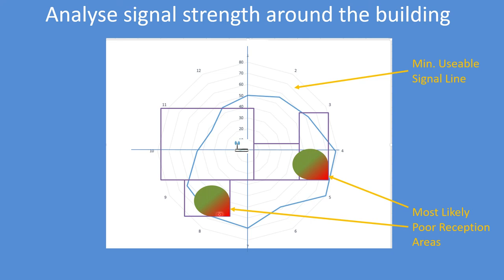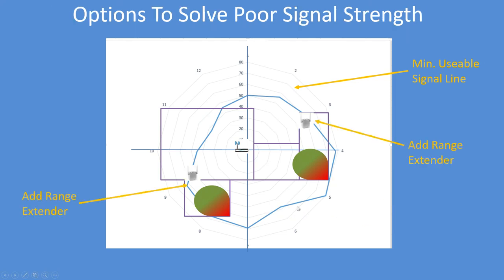You can do this by trial and error, but this shows how you can use an ESP32 or ESP8266 to undertake a site survey. I solved the coverage problem by adding range extenders, and I chose those positions using this site survey. Note that the diagram is approximately centred on the router, not the property. Enjoy!